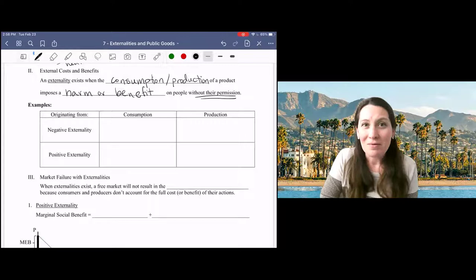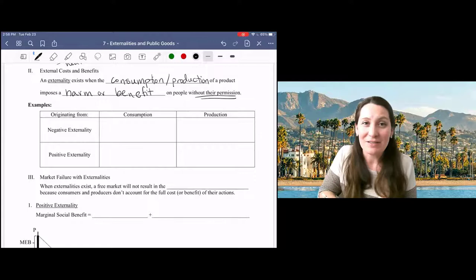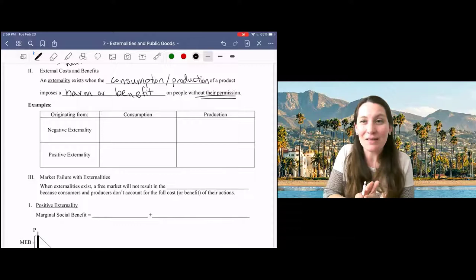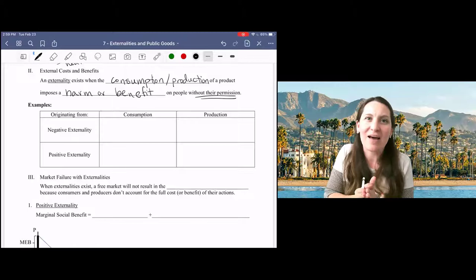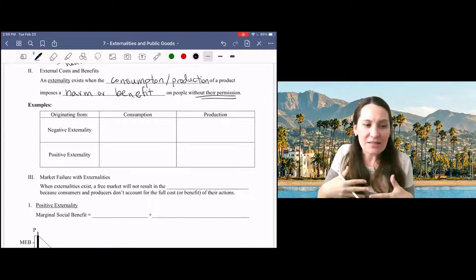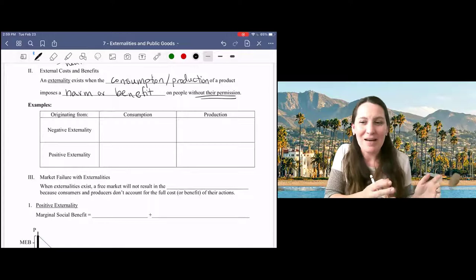In our normal supply and demand graph, supply represents the cost of production, demand represents the benefit of the product. And so at equilibrium, we have produced as long as the benefit is bigger than the cost. But when we don't take into account the full cost or benefit of our actions, then that equilibrium will not be at the right place. So let's just go through some examples of the range of negative and positive externalities originating from either consumption or production.